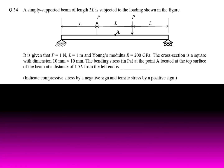Question 34: A simply supported beam (SS beam) of length 3L is subjected to the loading as shown in the figure. It is given that P = 1 Newton, L = 1 meter, Young's modulus E = 200 GPa. The cross section is a square with dimension 10×10 mm². We have to calculate the bending stress at point A located at the top surface of the beam at a distance of 1.5L — that is, the midpoint — from the left end.